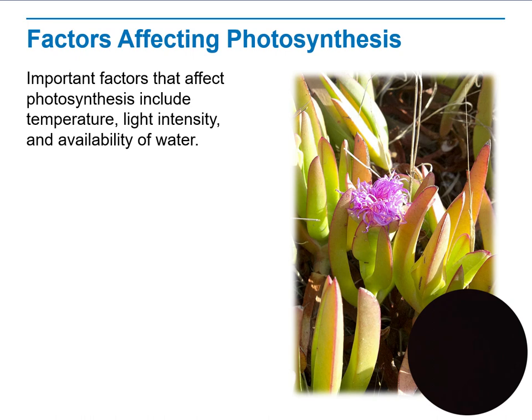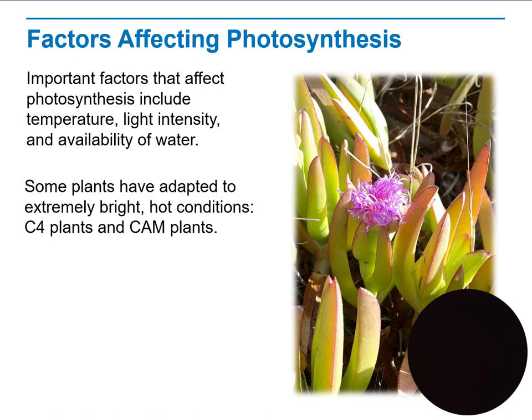There are factors that can affect the production of photosynthesis, including temperature, light intensity, and availability of water. Some plants have adapted to extremely bright or hot conditions — C4 plants and CAM plants are examples of this.